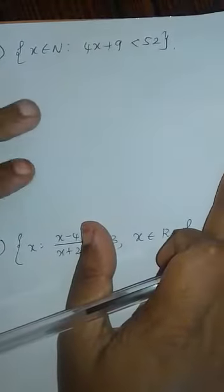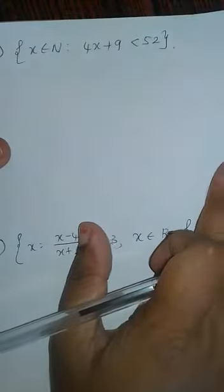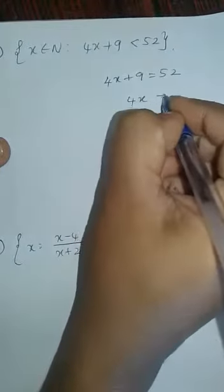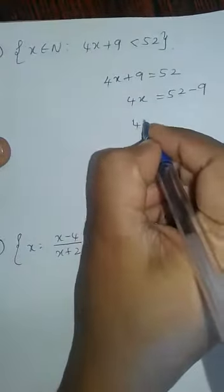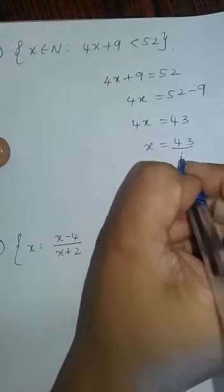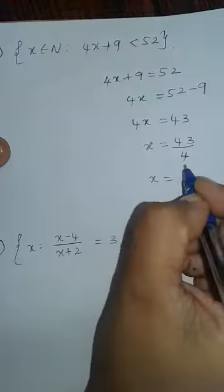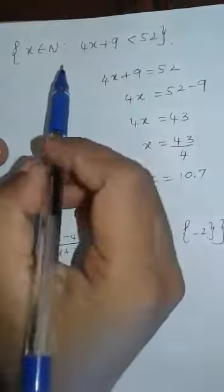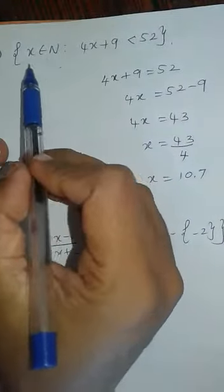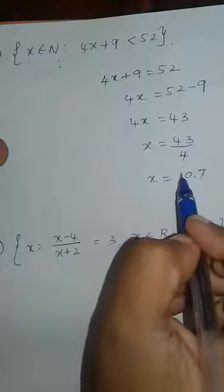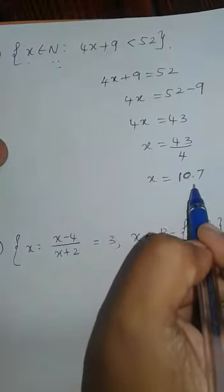Third subdivision: X belongs to N and the condition is 4X plus 9 less than 52. Taking 4X plus 9 equal to 52, we get 4X equal to 52 minus 9, so 4X equals 43, and X equals 43 divided by 4, which is approximately 10.7. Since X must belong to N, 10.7 is not a natural number.